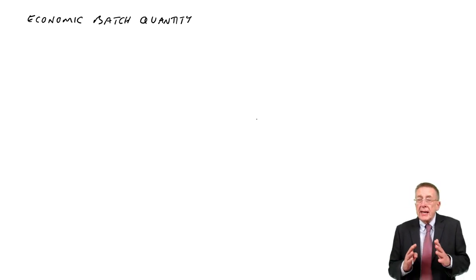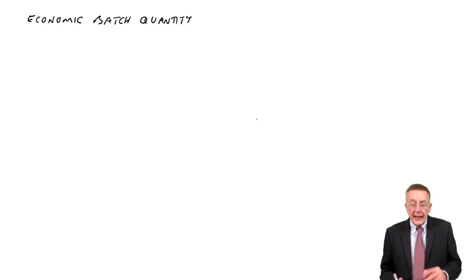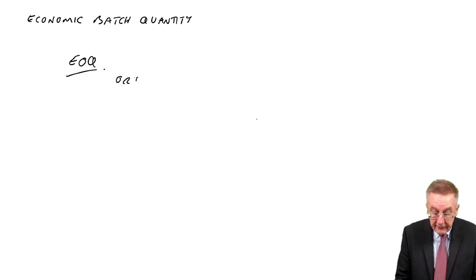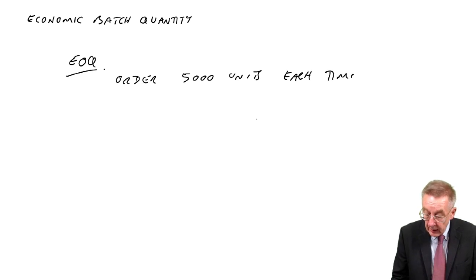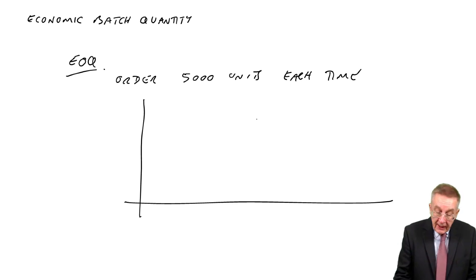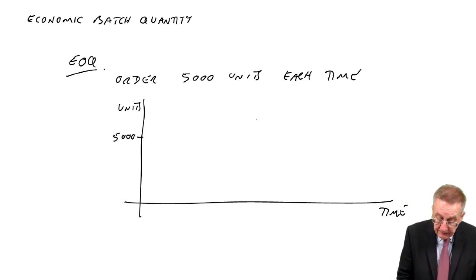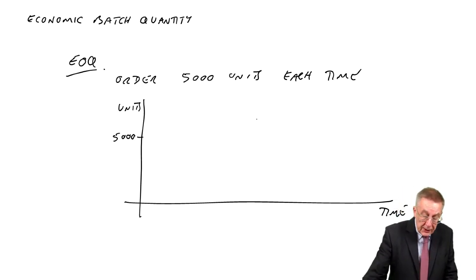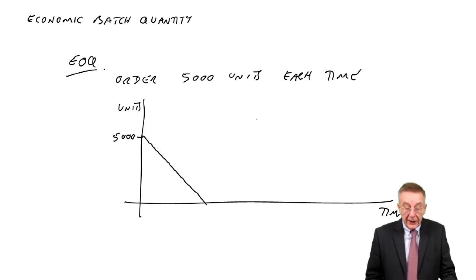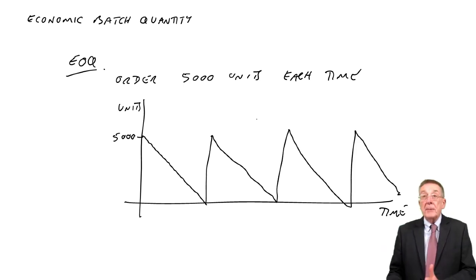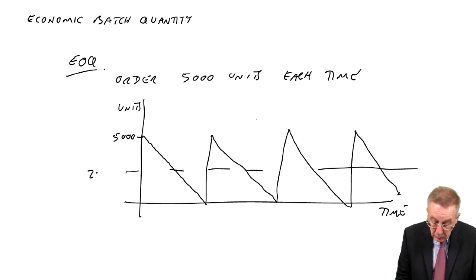In the previous two lectures, we were looking at the Economic Order Quantity. At the very beginning, I explained that if we were ordering 5,000 units each time, I drew a little graph showing units over time. We'd start the year with 5,000 units in inventory, gradually use them up until inventory falls to zero, then get in another 5,000 from the supplier, and so on — going between 5,000 and zero, with an average inventory of 2,500.